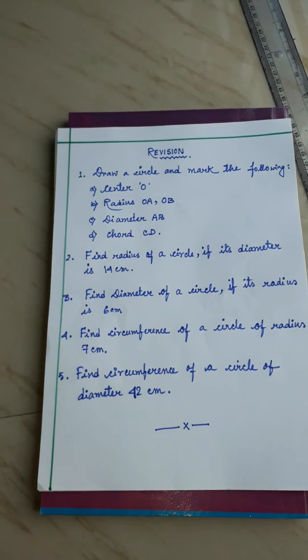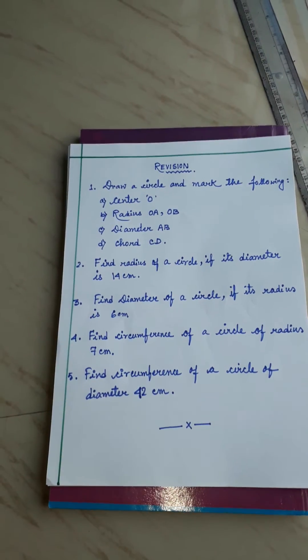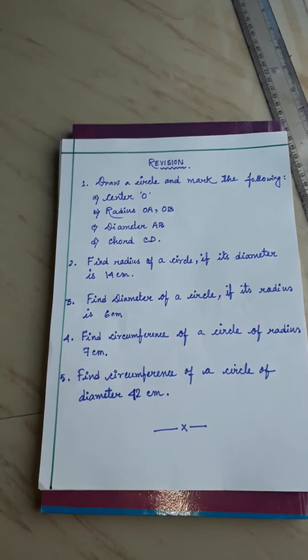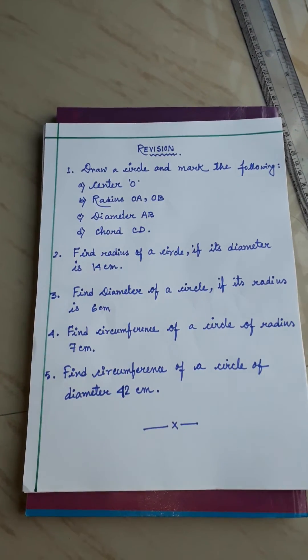In the third number, find diameter of a circle if its radius is 6 cm. Here radius is given, you have to find out the diameter.